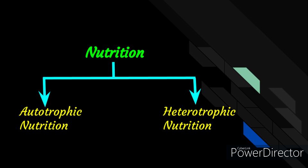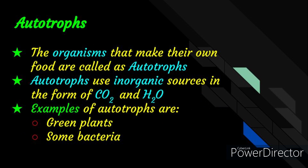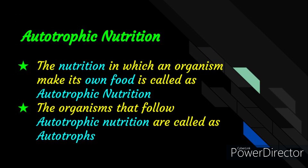In this video, let us learn about autotrophic nutrition. In the word autotrophs, 'auto' means self and 'trophs' means nourishment. The organisms that make their own food are called autotrophs. Autotrophs use inorganic sources in the form of CO2 and H2O, that is carbon dioxide and water. Examples of autotrophs are green plants and some bacteria. Nutrition in which an organism makes its own food is called autotrophic nutrition.